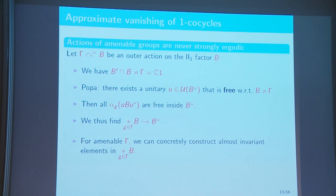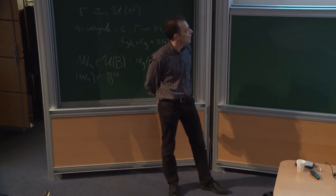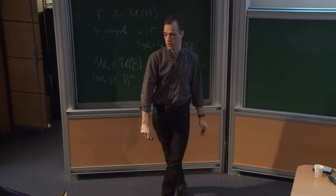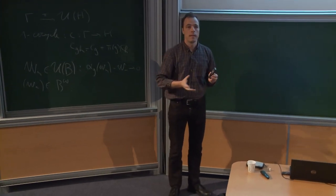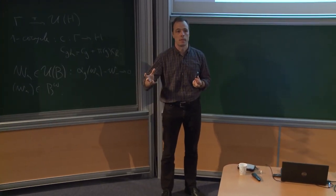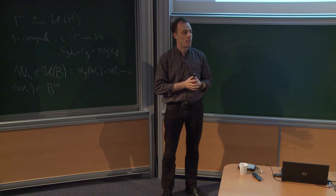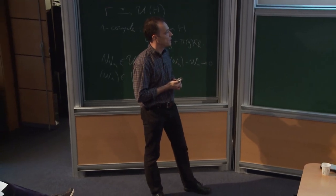This reasoning has very recently been shown to work in the type III case as well, at least for state-preserving actions — a result of Amine Marrakchi. The group is amenable but the factor need not be amenable. Putting everything together: 1-cocycles are approximately inner, which gives enough equivariant choice to solve the 2-cocycle problem, and then yields the classification result for regular subalgebras.